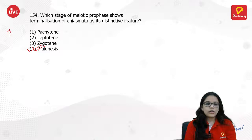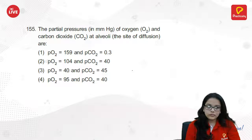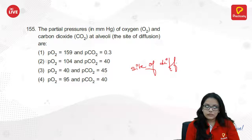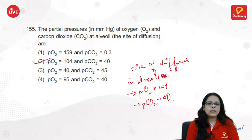Partial pressures of oxygen and carbon dioxide at alveoli — the site of diffusion: partial pressure of oxygen will not be 4 and partial pressure of carbon dioxide will be 4. So it's option 1, not 4 and 4.